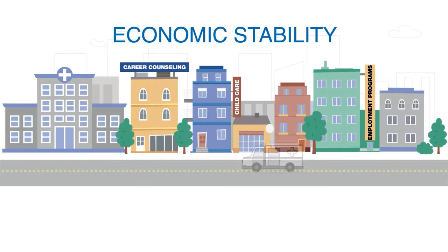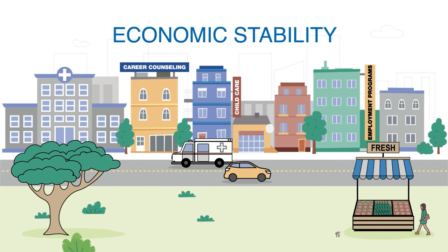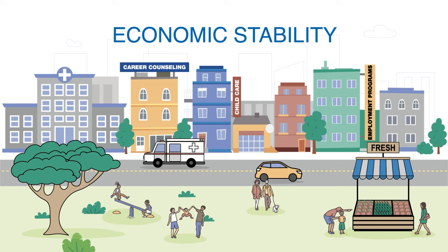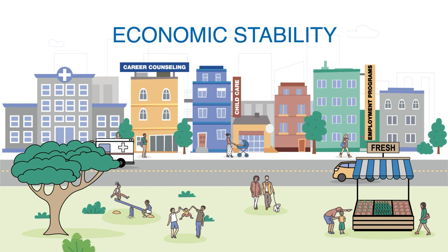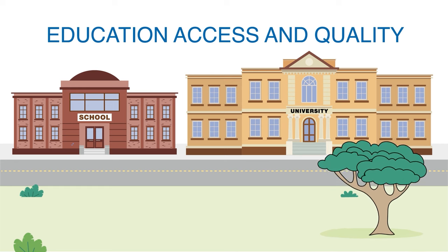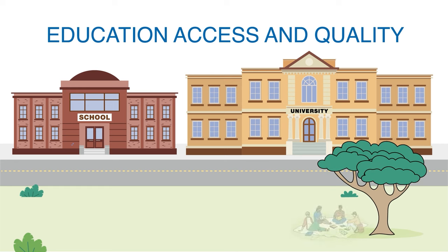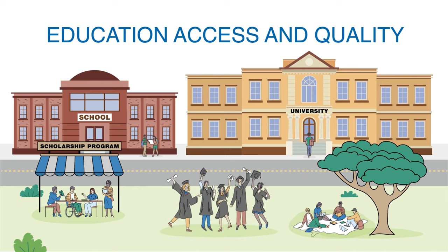Economic stability means people are able to afford things like healthy food, health care, and safe housing. Employment or job programs, career counseling, and availability of child care can help increase economic stability in communities. People with higher levels of education are more likely to be healthier and live longer. But some children live in places with poorly performing schools, and many families can't afford to send their children to college. Programs to help children and adolescents do well in school and help families pay for college can also help people be healthier in the long term.